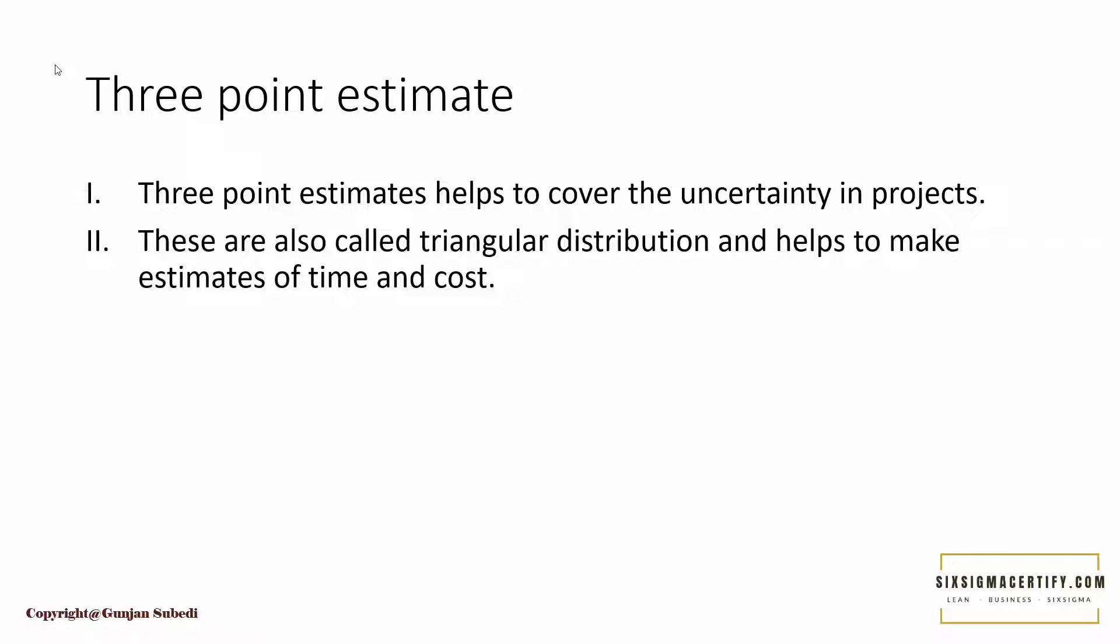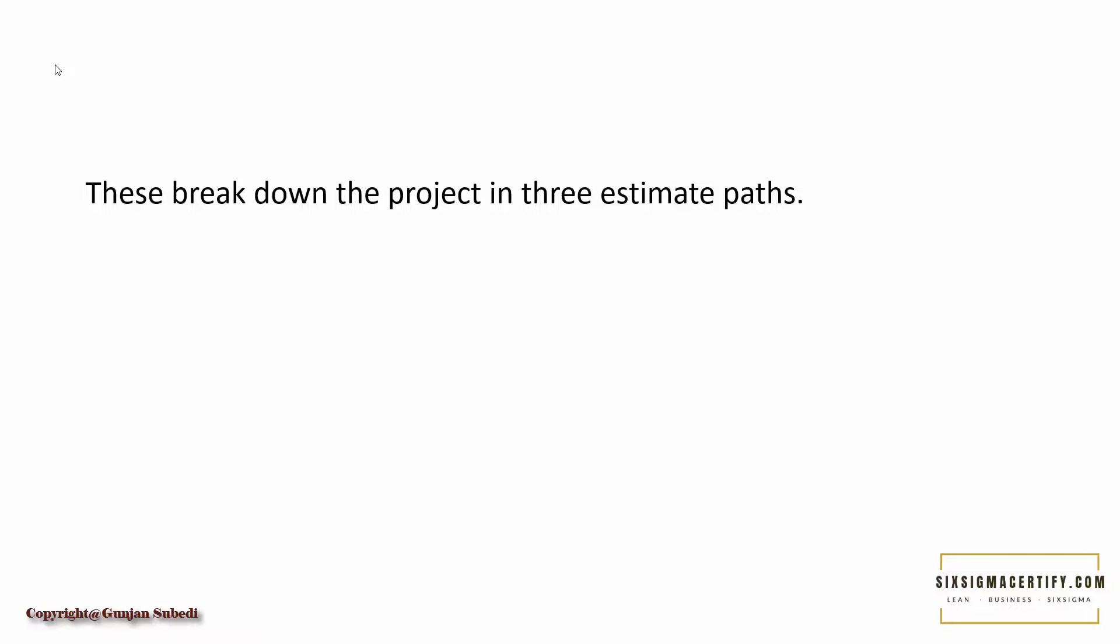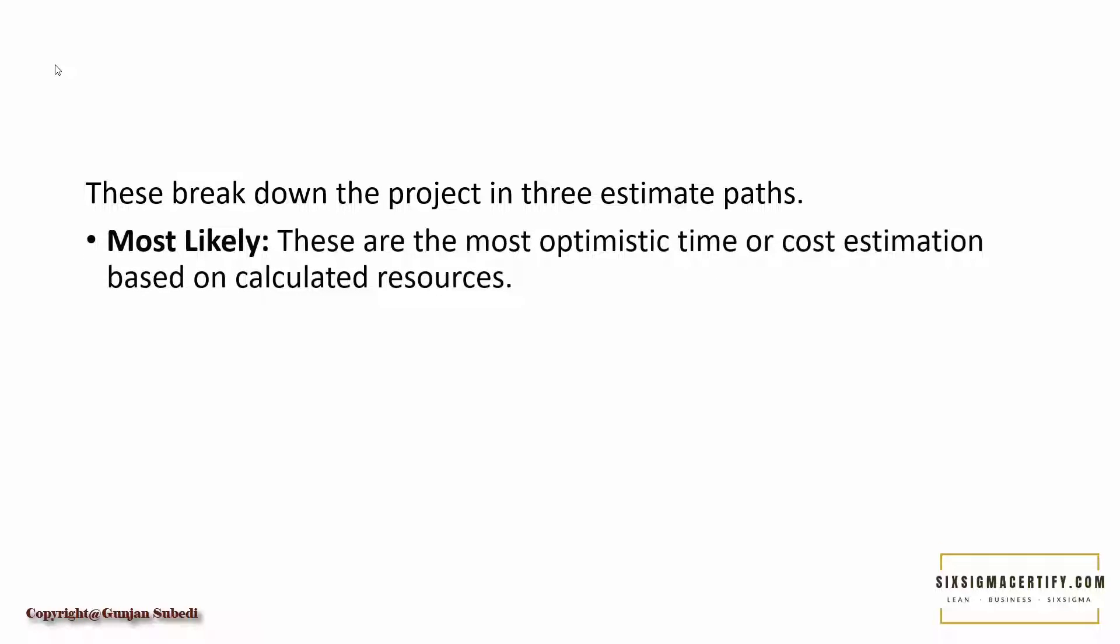As I already told, these are also called the triangular distribution and they help to make the estimation of time and cost. Generally, this triangular distribution, which is a kind of three point estimate, breaks down the data into three estimate parts. That is most likely, the most optimistic time or cost estimation based on the calculated resources. This simply means that this is the most likely happening scenario, the prediction that is most likely going to happen. But one condition is that in order to predict that something is most likely to happen, there should be good availability of resources and there should be a pre-plan.